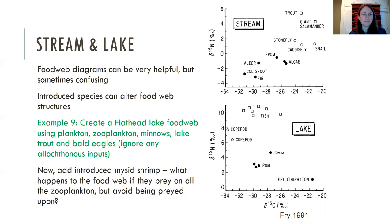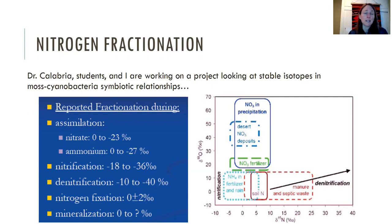Okay, so just a few more examples. I just love this stuff; it's so exciting. Dr. Lolita Calabria and I are working with her students on a project looking at stable isotopes in a moss-cyanobacterial symbiotic relationship, where the cyanobacteria that grow in the moss help with nitrogen fixation. So they're fixing nitrogen from the atmosphere, so there's all this really cool fractionation according to the nitrogen cycle that we'll talk about in further lectures. And so a nitrogen fixer might have a different nitrogen signal than a denitrifier or a different type of organism.